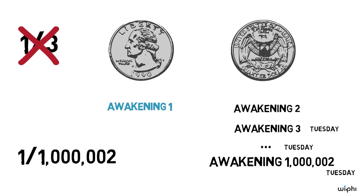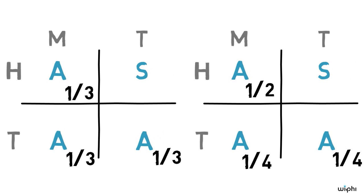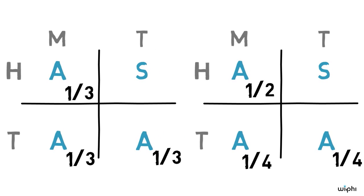The coin was fair, so how can it be that we ought to think that there was just a one in million and two chance that the coin came up heads? So whether we go for the one third view or the one half view, it seems like we're going to run into problems. Which view is best? I'm not sure. What do you think? Thanks for watching.